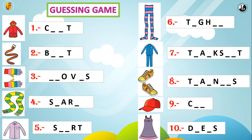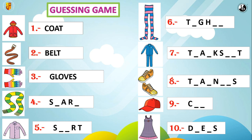Now everybody, guessing game. What is number one? Number one is a coat. Number two — what is number two? Number two is a belt. Number three — what is number three? Number three are gloves. Number four — number four is a scarf. Good job.